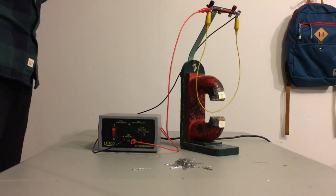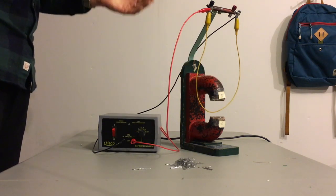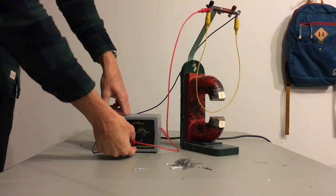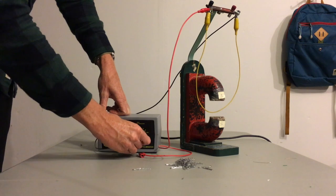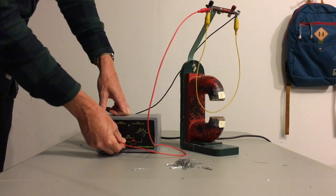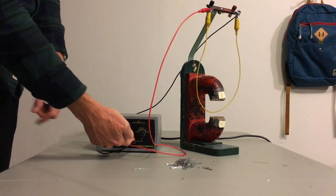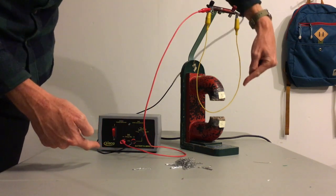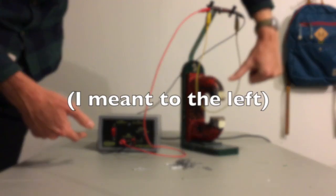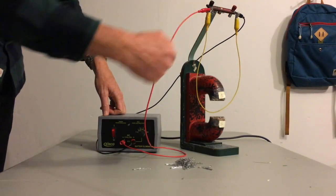What happens now if I reverse the direction of current in the yellow wire? Well, the easiest way to do that would be to switch the red and the black connections. So now black is connected to the positive terminal, which means that current is going to go up the black, down this side of the yellow, to the right across the yellow, and down the red and back.